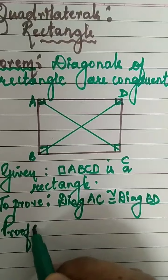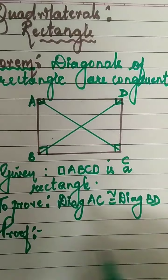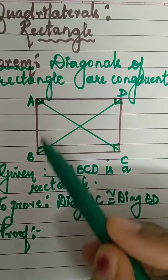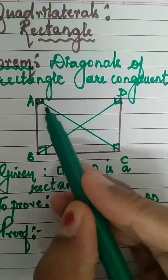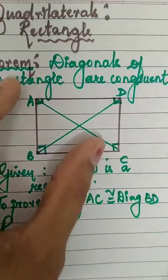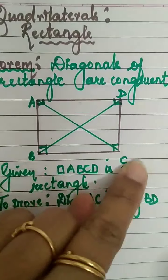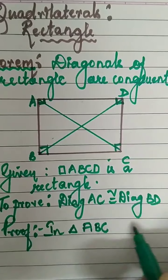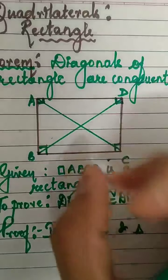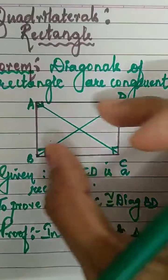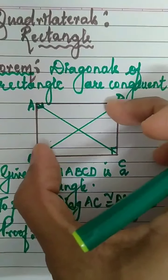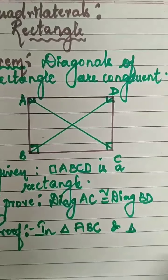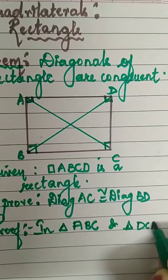Proof: we want to prove that AC is congruent to BD. Let us consider two triangles where we can see AC and BD. AC is part of triangle ABC, so I will take triangle ABC. For diagonal BD, BD is contained in triangle DCB. So, in triangle ABC and triangle DCB — can we prove these two triangles congruent?